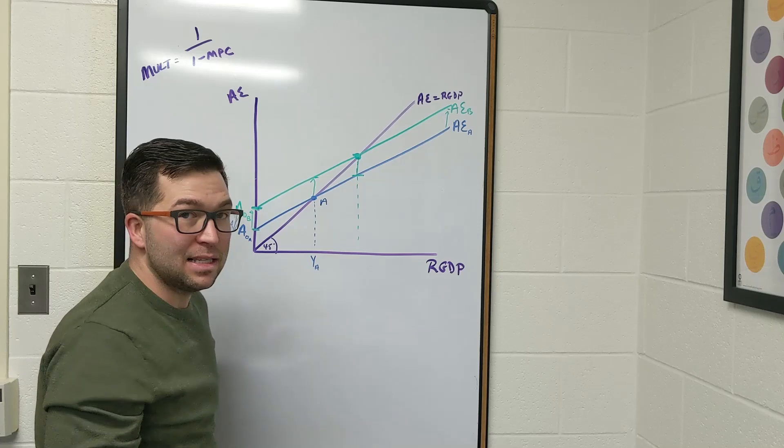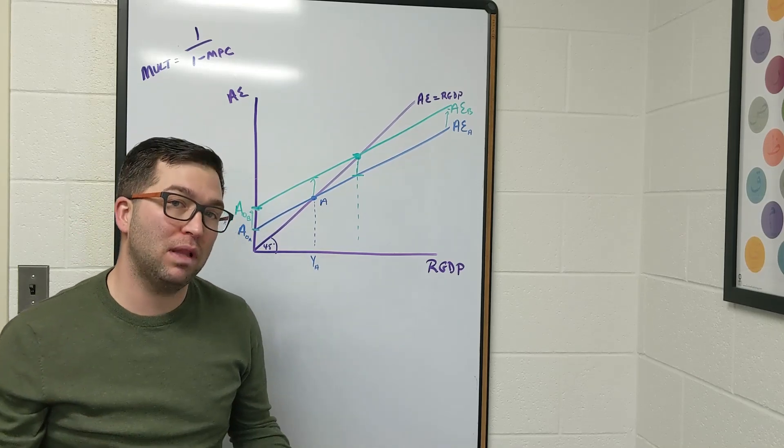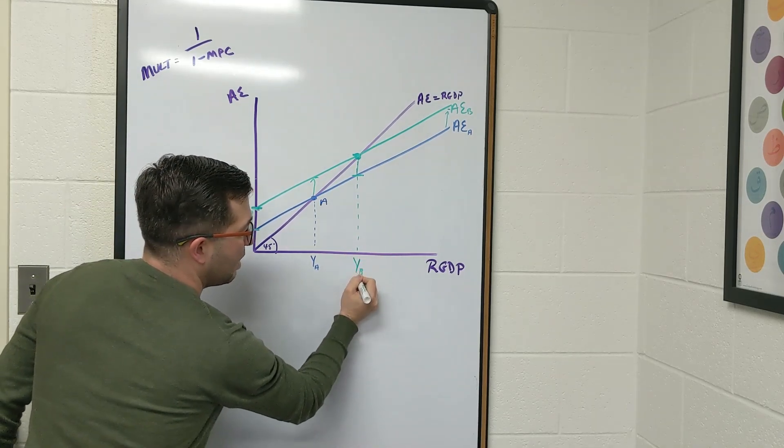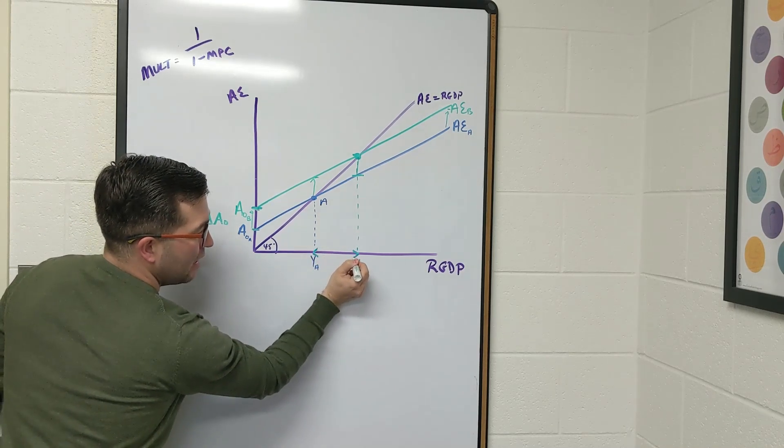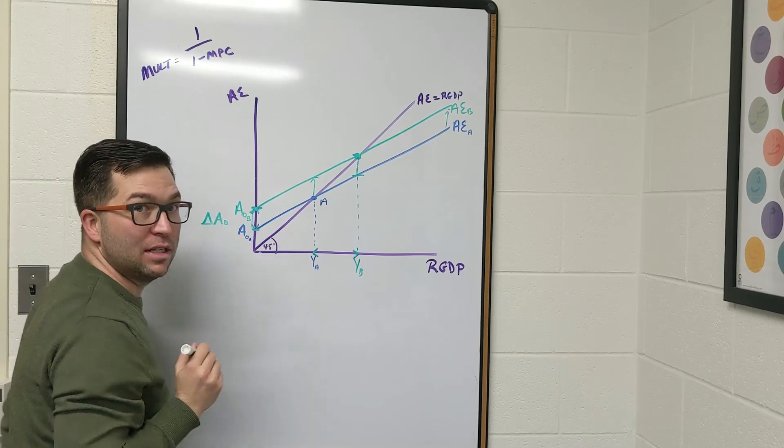Getting these distances 100% correct is not the point here. The point here is to show this multiplied effect. And what we notice is we get this is Y sub B, and you can see that this distance from here to here is much bigger than this distance from here to here.